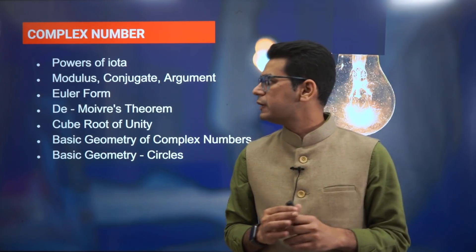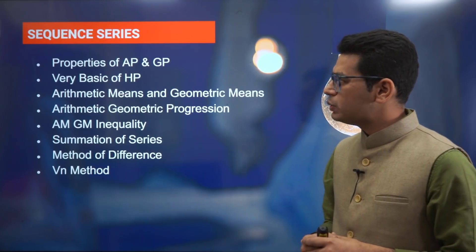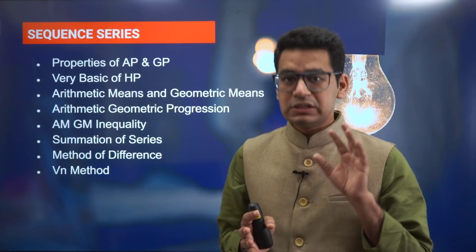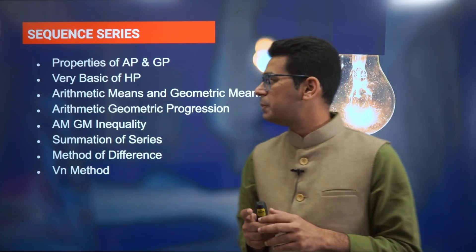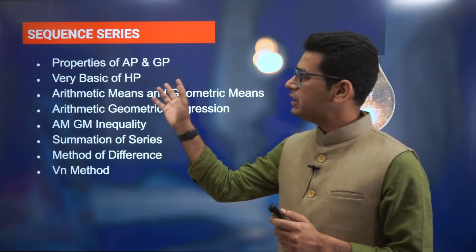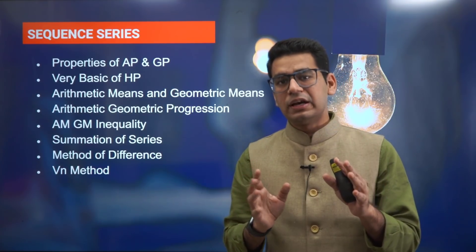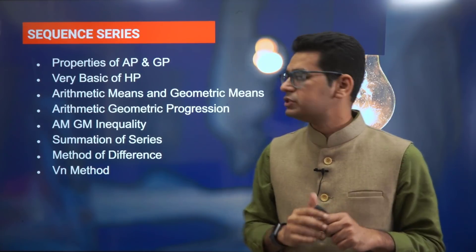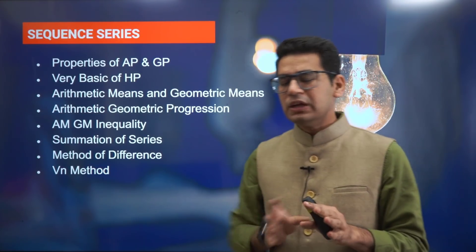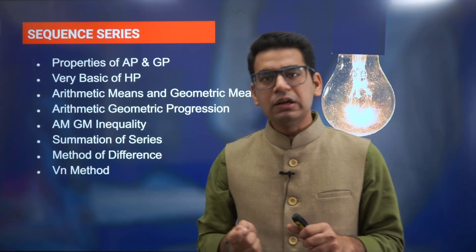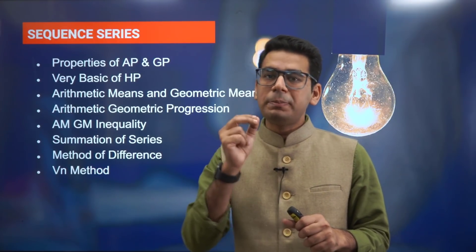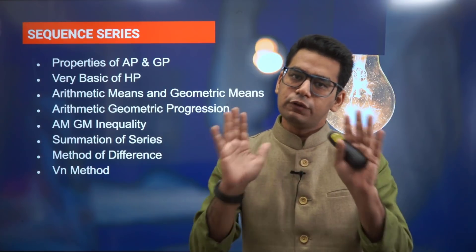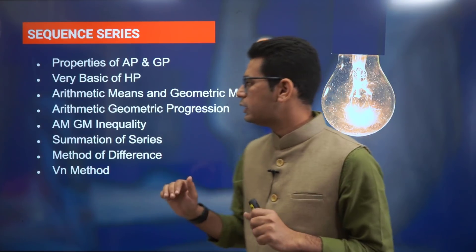Next is sequence and series — again a very vast and very important topic with regard to JEE Mains; some sessions have two questions coming from this chapter. Properties of AP and GP you have been doing since 10th class, but they remain among the most important topics. For HP, a direct question will almost never come, but you should intrinsically know the basic definition — that the reciprocals are in AP — that's it. Nothing more than that needs to be done for HP.